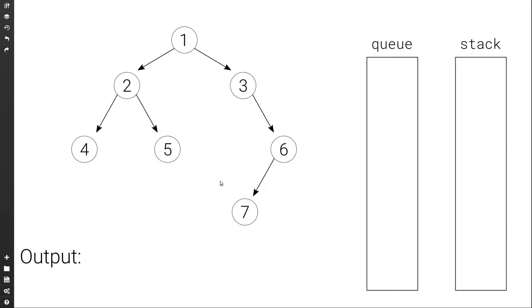Let's see this with an example. Here we have a binary tree, and to do a reverse level order traversal means to start at the last level and visit the nodes left to right — in this case it's only 7. Then go to the previous level left to right: 4, 5, 6. Then the previous level left to right: 2, 3. Then the previous level: 1. So the output will be 7, 4, 5, 6, 2, 3, 1.